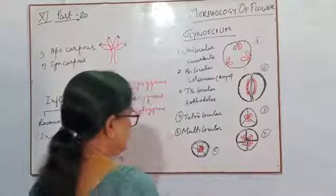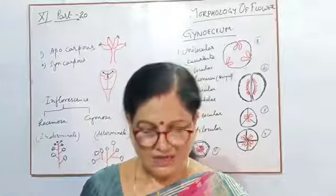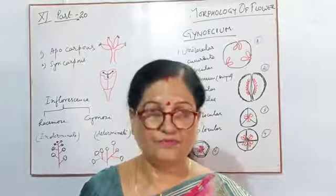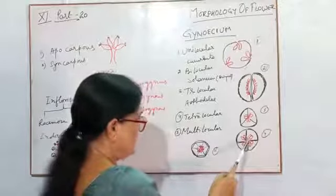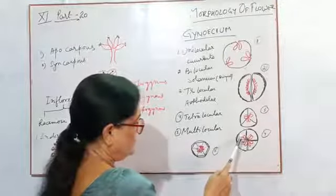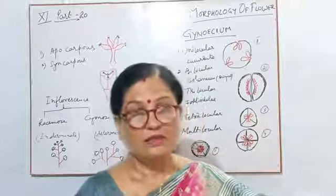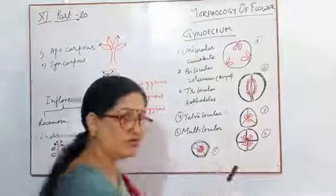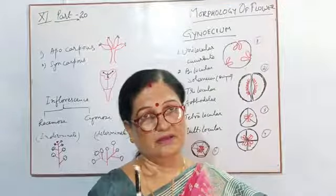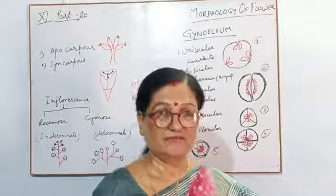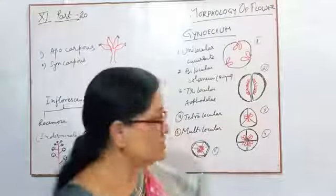Then tetralocular — 'tetra' means four, so there will be four parts present in that ovary. The locule is divided into four parts. You can see this in Ocimum — Ocimum means basil. The ovary of Ocimum is tetralocular, divided into four locules.